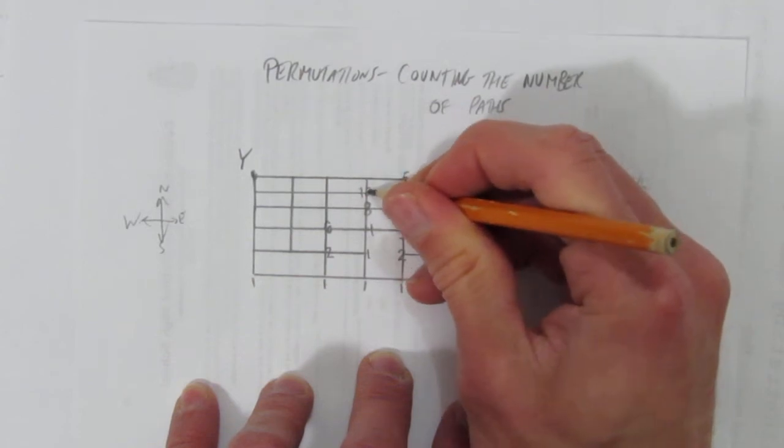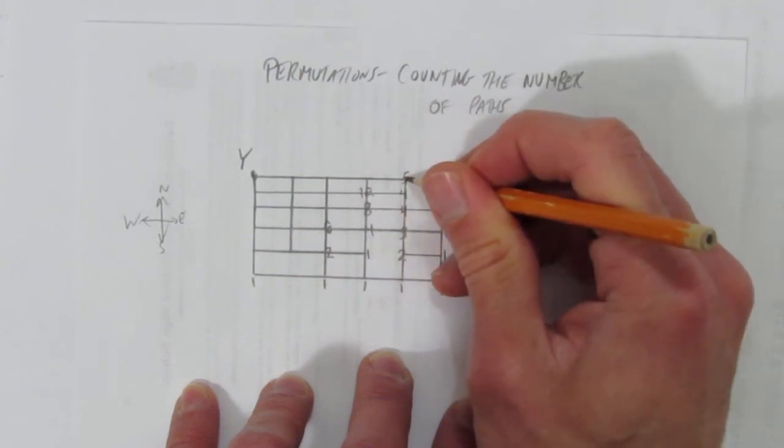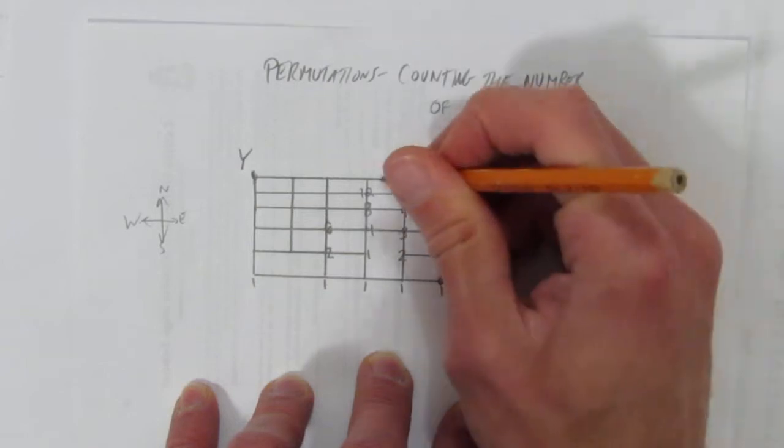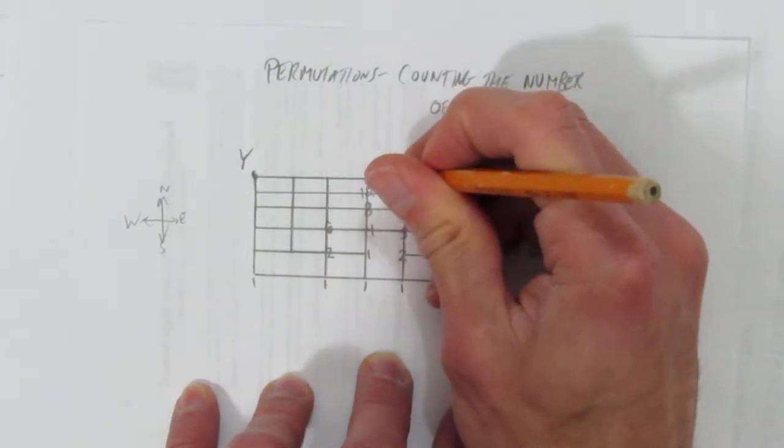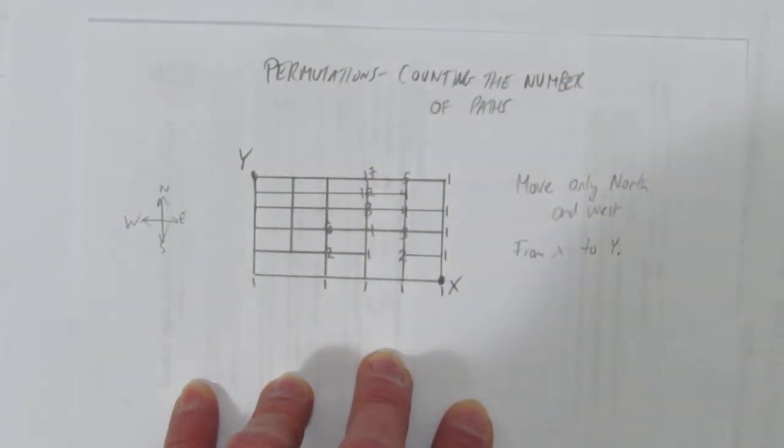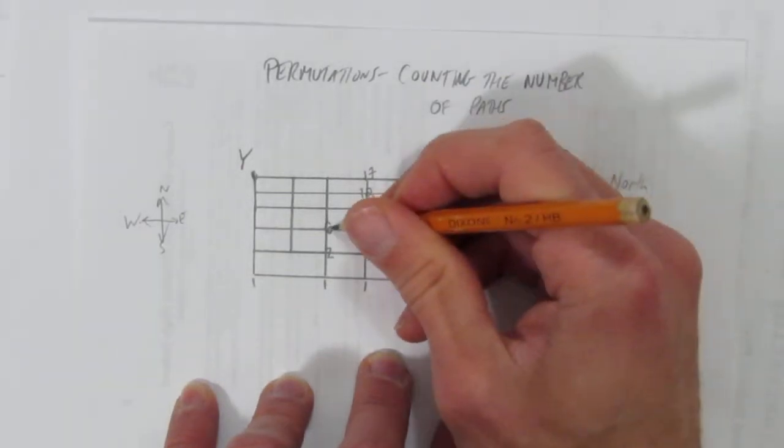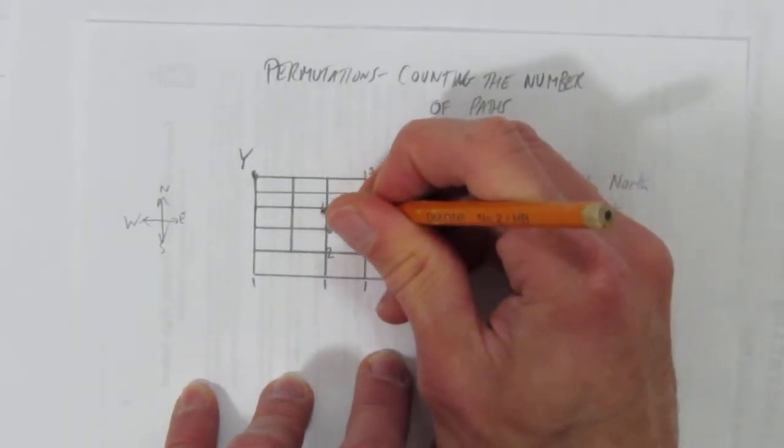And this intersection, you have twelve ways to get below it. Twelve ways to the right. Five ways to the right of it. So a total of seventeen ways to get to this intersection. And as you see, once you get it, it gets fast.